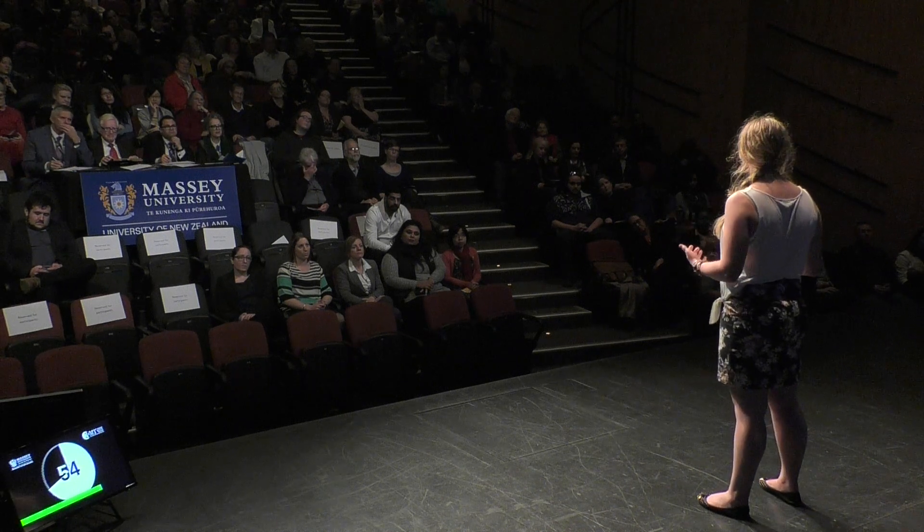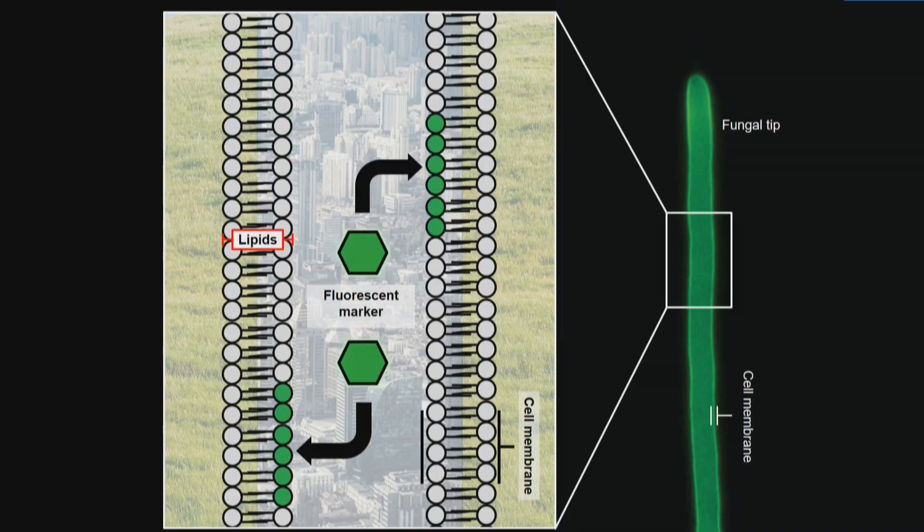To know if lipids are involved, we first need to know which ones are even present. To do this, I am using a cool technique — I specially designed some fluorescent markers and put them into a fungus. Each marker is attracted to one specific lipid, and when I make the lipid glow, the presence of that lipid can be visualized. It's kind of like painting the city wall, where each type of rock has a different color so I can see where they are.